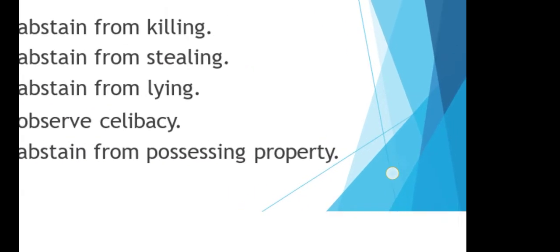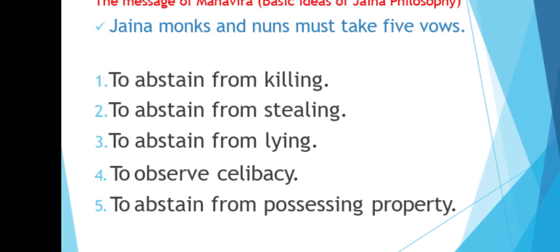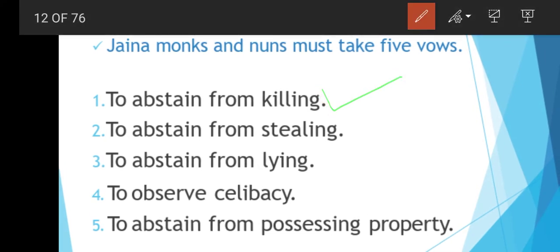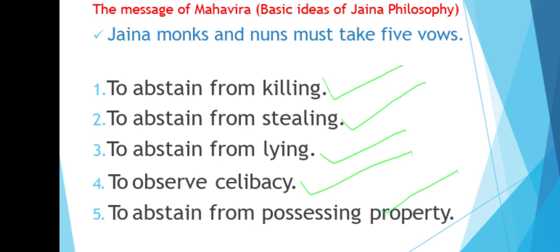Jain monks and nuns must take five vows. First, abstain from killing. Second, abstain from stealing. Third, abstain from lying. The remaining two vows are also taken before receiving diksha. Diksha means the initiation ceremony when someone enters Jainism as a nun or monk.